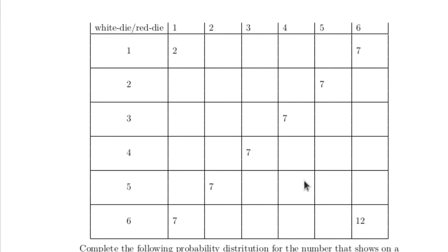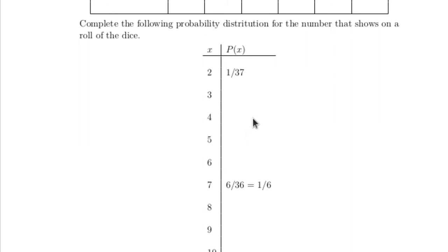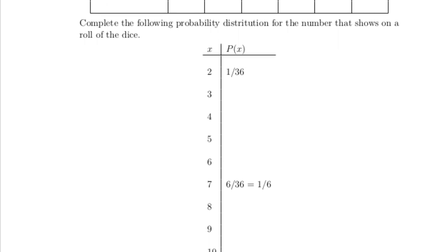I've left those as exercises in the handout — fill out the rest of the chart. For example, if you rolled a two on the white and a three on the red, there'd be a five, and so on. Then you can build the probability distribution table. The probability of getting a three — you'd look at all the ways to get a three out of the 36. This should be one out of 36, corrected. So you can fill out the rest of that probability distribution table.